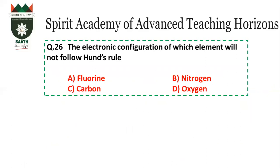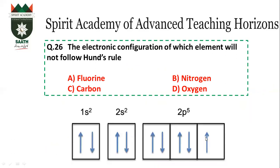Question number 26: Electronic configuration of which element will not follow Hund's rule? According to Hund's rule, electrons remain in separate orbitals with the same spin. For Hund's rule to be applicable, there must be at least 2 unpaired electrons. If there is only 1 unpaired electron, Hund's rule does not apply.